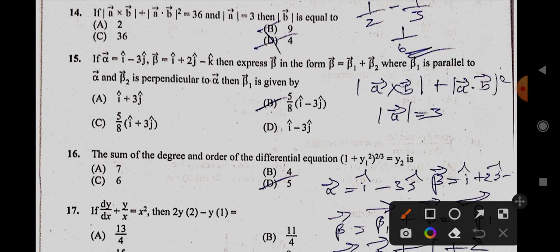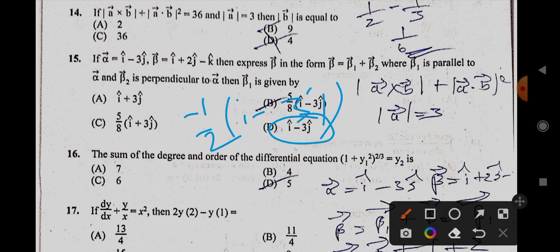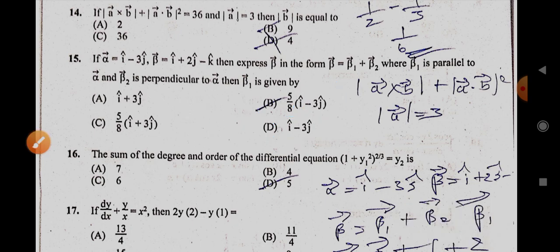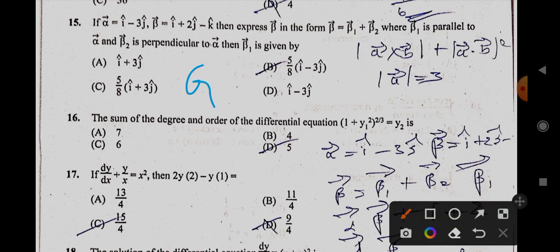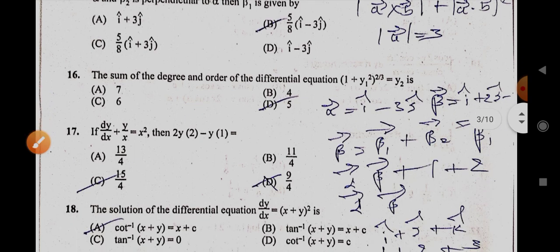As well as 15th also, I think it's a grace mark we will get because in this option there is no minus half. Minus half into I minus 3J we get, so but there is no minus half here. So I think it may be grace for this.